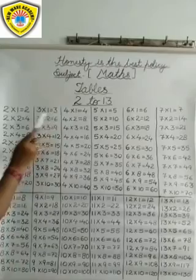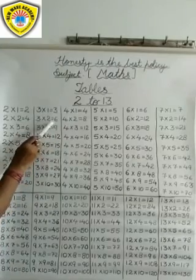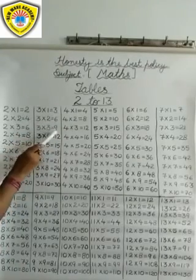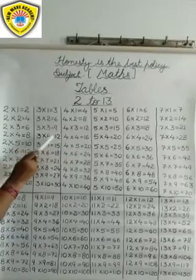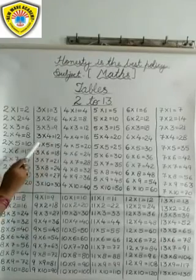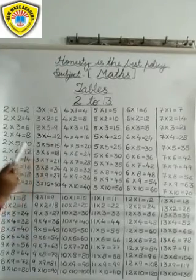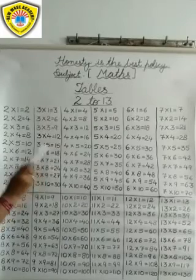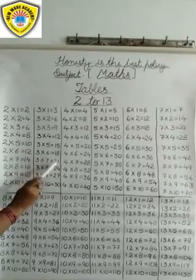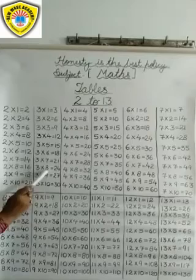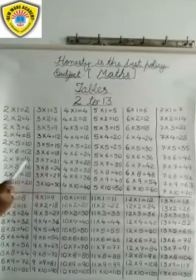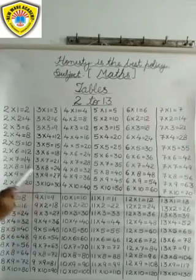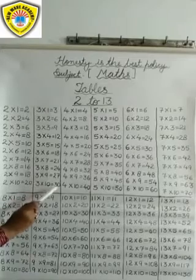3 1s are 3. 3 2s are 6. 3 3s are 9. 3 4s are 12. 3 5s are 15. 3 6s are 18. 3 7s are 21. 3 8s are 24. 3 9s are 27. 3 10s are 30.